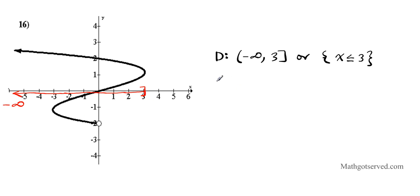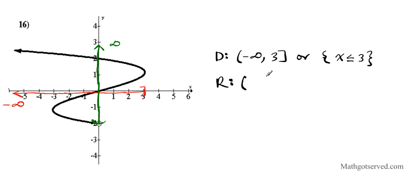For the range, we look at the vertical span — how high and how low the graph goes. It goes as low as negative 2, but negative 2 is not included, so we use a parenthesis. Then it goes up forever to infinity. So the range is from negative 2 to infinity, with negative 2 not included. Using inequality notation, y is strictly greater than negative 2. Because we have an open circle, we cannot use the line of inclusion — that's only for a closed circle.